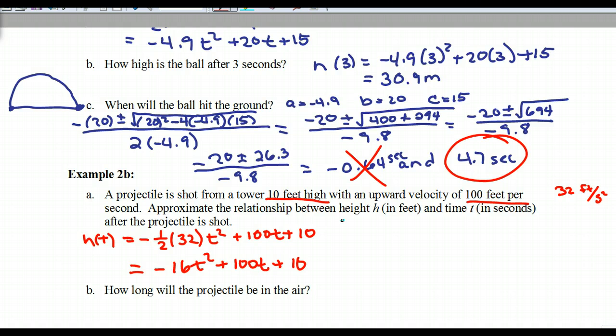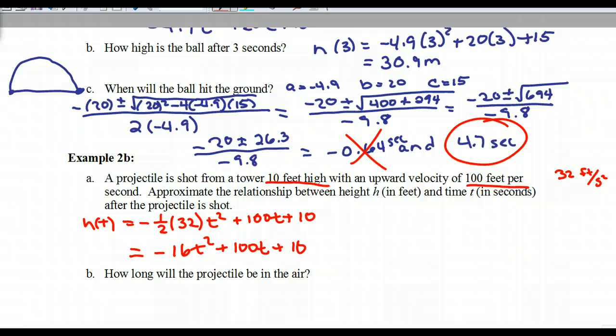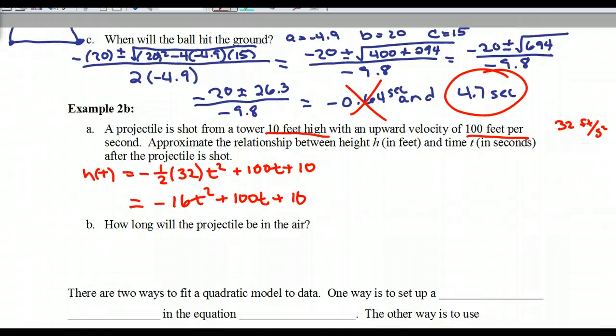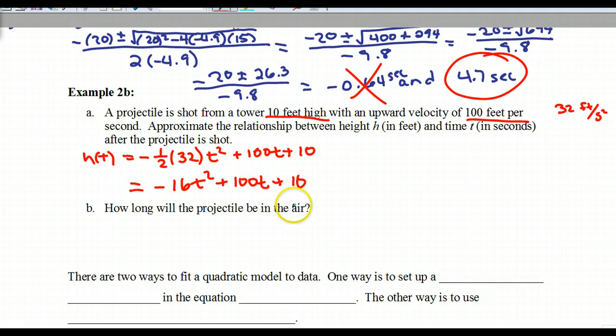One thing I can guarantee you guys is this is on the MCA. If you've already taken them, then awesome. And I guarantee you it'll be on the ACTs as well. If you're a junior, you take MCAs. It says, how long will the projectile be in the air? In other words, when will it reach the ground again? So I need to do what? X intercepts. So I'm going to use my quadratic formula on that one. You guys, I'm not going to take the time to go through this right now because it takes time. I want to go through some other stuff. But you know that A is negative 16, B is 100, and C is 10. So if you want to take the time to go through that and stick it in your calculators, you can do that.